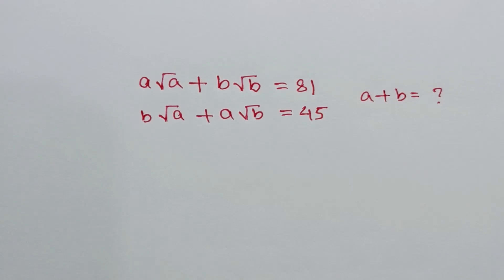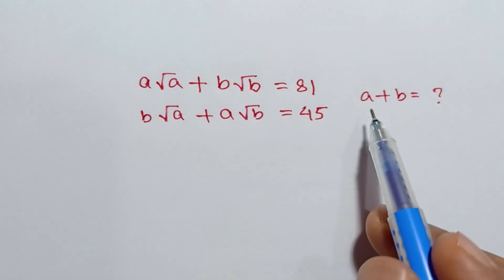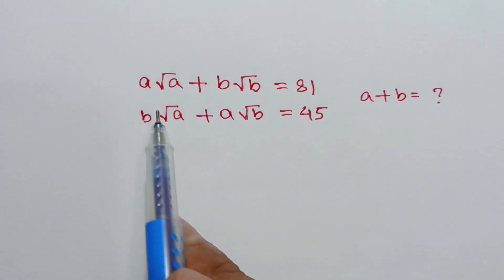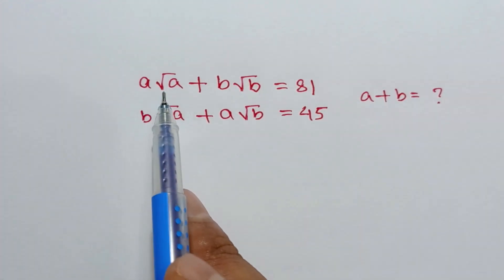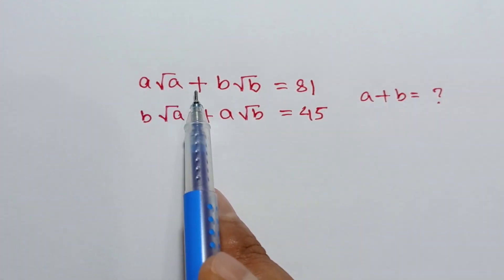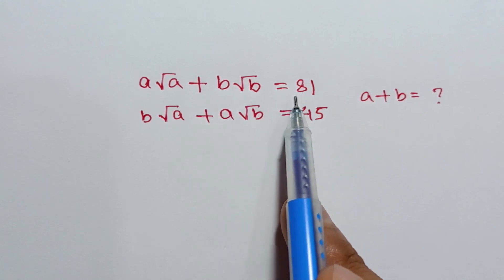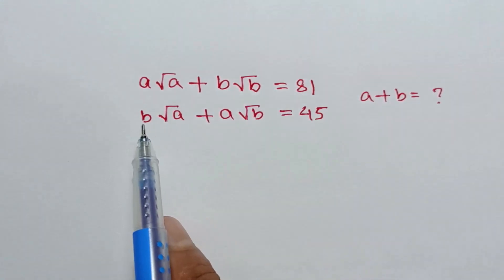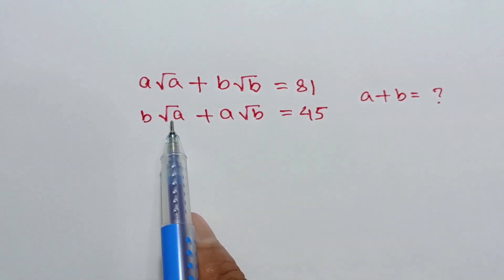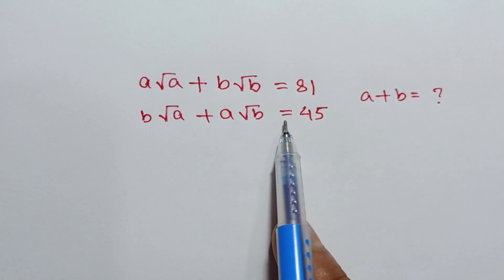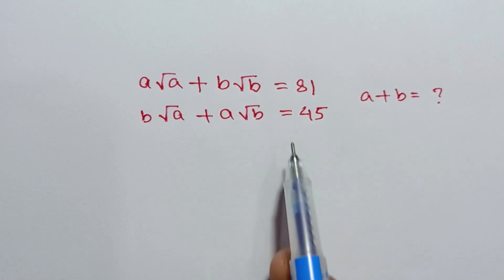Hi everyone. In this video I am going to show how to find the value of a plus b when a times square root of a plus b times square root of b is equal to 81, and b times square root of a plus a times square root of b is equal to 45.